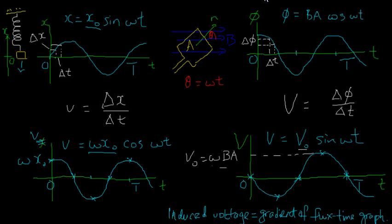In the last video, I talked about how we can obtain the velocity time graph from the flux time graph by taking the gradients of the flux time graph. Did I say velocity again? I mean how we can obtain the voltage from the flux time graph by taking its gradients.